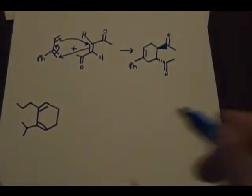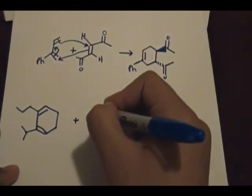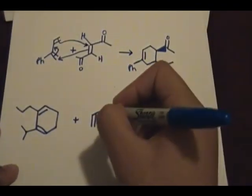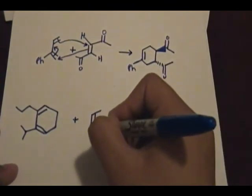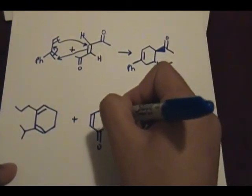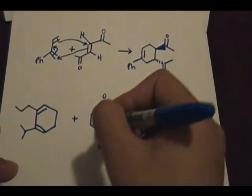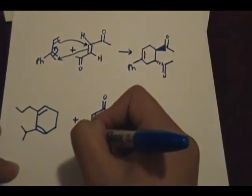Okay, and this reacts with, let's just say, this dienophile that has an ester and a ketone that are trans to one another.